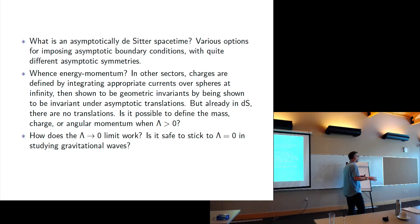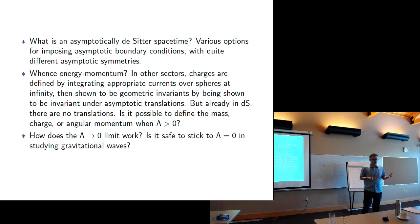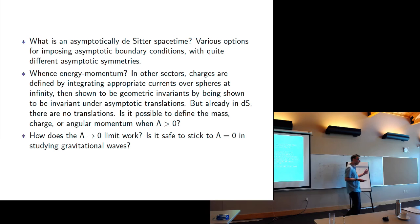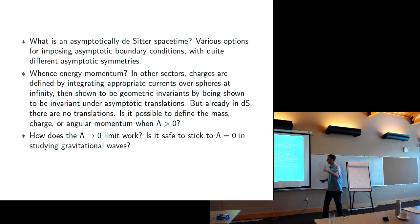One problem is there's just an enormous variety of inequivalent definitions of 'asymptotically de Sitter.' Some differ in small ways, but some differ quite dramatically — for instance, in what kind of asymptotic symmetries you get, and how useful they are for measuring gravitational radiation or modeling gravitational radiation in a de Sitter setting. There's a tremendous amount of disagreement about how to work all this out.